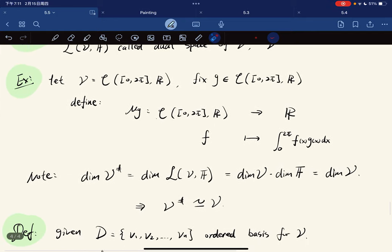Now the dimension of V* is equal to the dimension of this space, which equals the dimension of the product. The dimension of F is one.